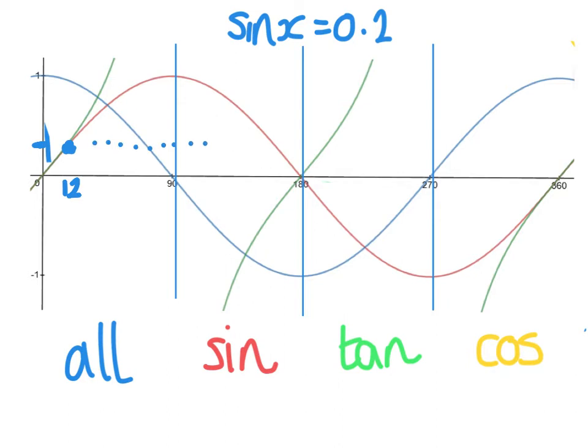But going further along, if you look at your sine graph, there is another answer here. How are we going to get that answer? The way you get that answer is using symmetry. This hump that goes from 0 to 180 is symmetrical. So if this answer here is 12 away from 0, then this answer here is 12 away from 180. So to get that second answer, you do 180 take away 12, which is 168.